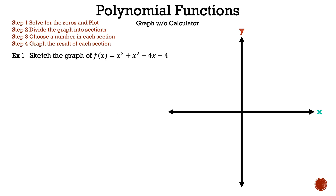Let's take a closer look at example one. The steps are: Step 1 — solve for the zeros and plot. Step 2 — divide the graph into sections. Step 3 — choose a number in each section. Step 4 — graph the result of each section. The question: sketch the graph of f(x) = x³ + x² - 4x - 4.